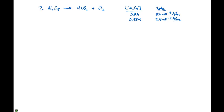So here we have 2N₂O₅ giving us 4NO₂ plus O₂. When we write a generic rate law, first we want to write the rate is equal to K times the concentration of the reactants to the x power. We're also given some experimental data here, and we have two data points, which should be enough to figure out what this rate law expression will be.